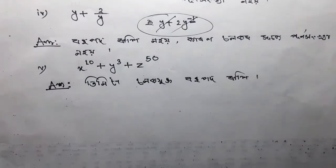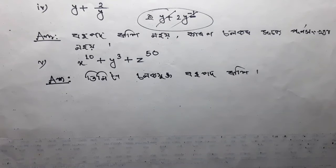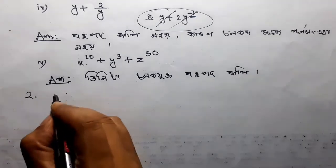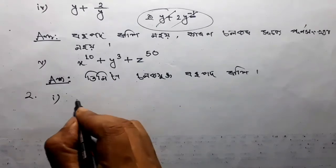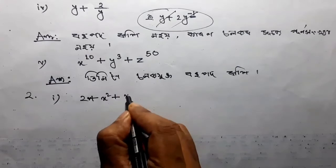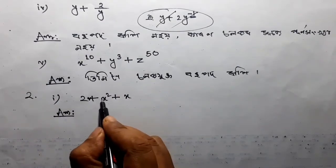The next number is x squared. This is the first chapter of the introduction. Number 2: 1 to 2 plus x squared plus x.